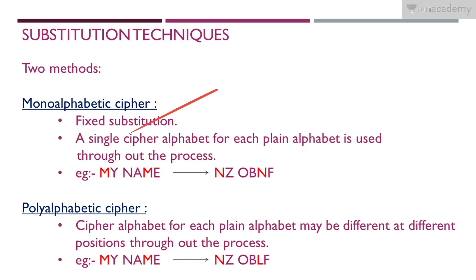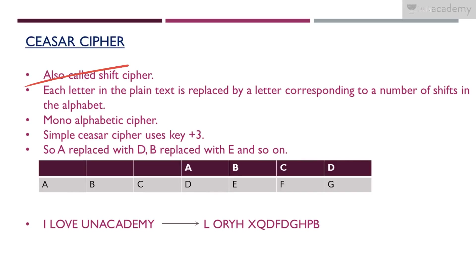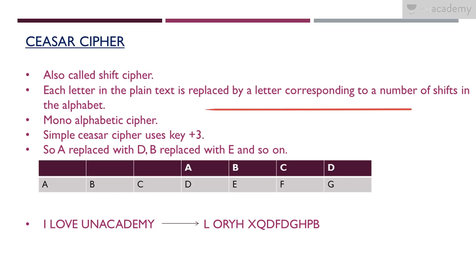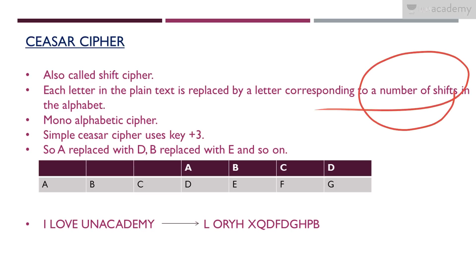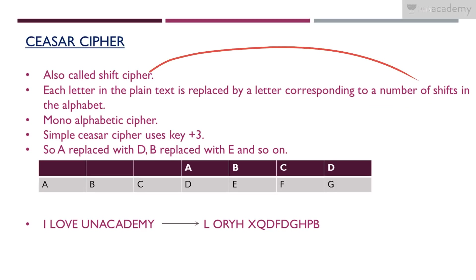Now let's start learning some specific symmetric ciphers. The first one is the Caesar cipher, also called the shift cipher. In this cipher, each letter in the plain text is replaced by a letter corresponding to a certain number of shifts in the alphabet. It is a mono alphabetic cipher, meaning the encryption alphabet is fixed throughout the process.